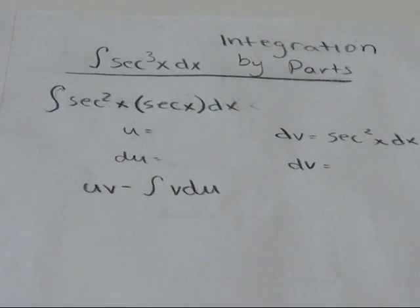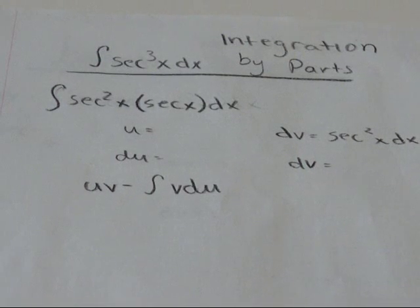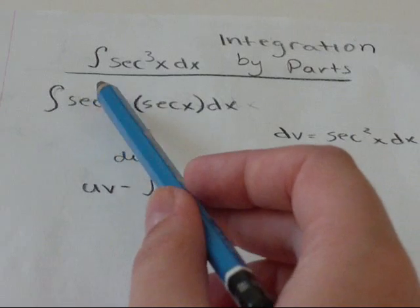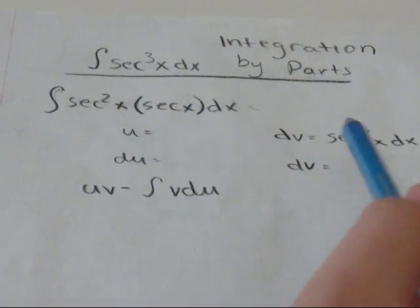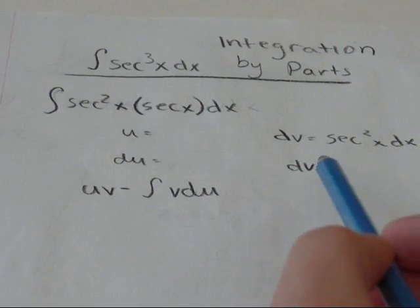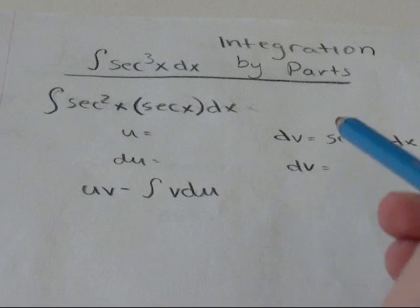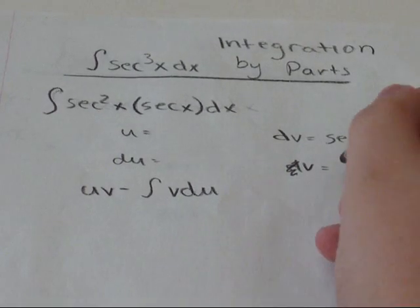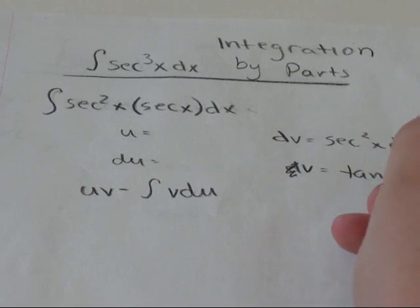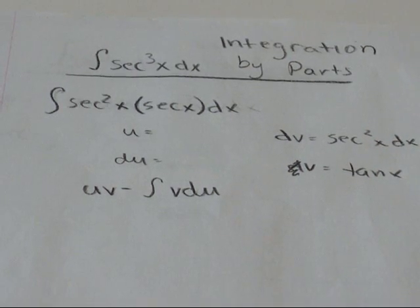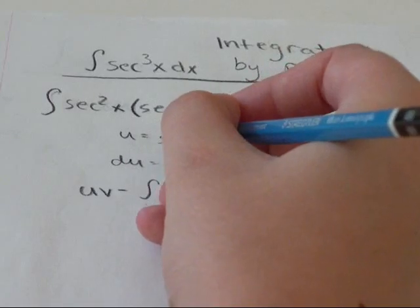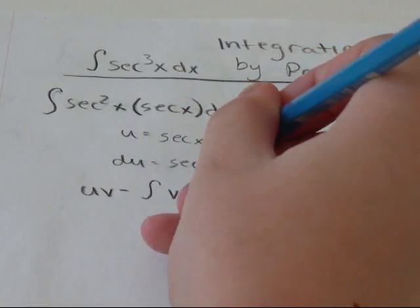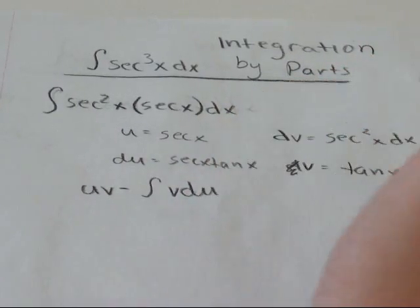The reason you want to do this is so that you can do integration by parts on it. What's really nice is if we let the secant squared x dx equal dv, when we take the integral of that, we're left with tan x. So by default, our u becomes secant x and the derivative of secant x is secant x tan x.